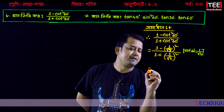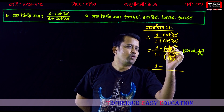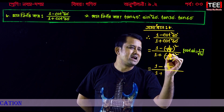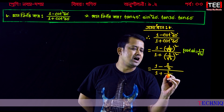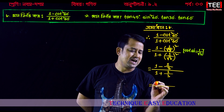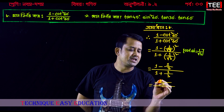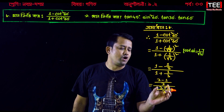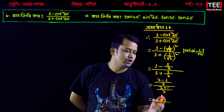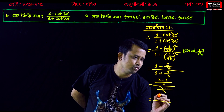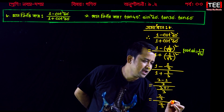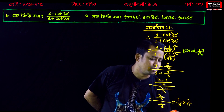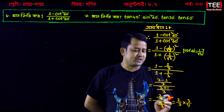Let me just write and do the calculation. 1 minus 1 squared, then 1 plus 1, because of the square, 3 minus 1. We get 2 by 3 and 4 by 3, which is equal to 2 by 3 into 3 by 4. So 2 by 3 into 3 is equal to 4.